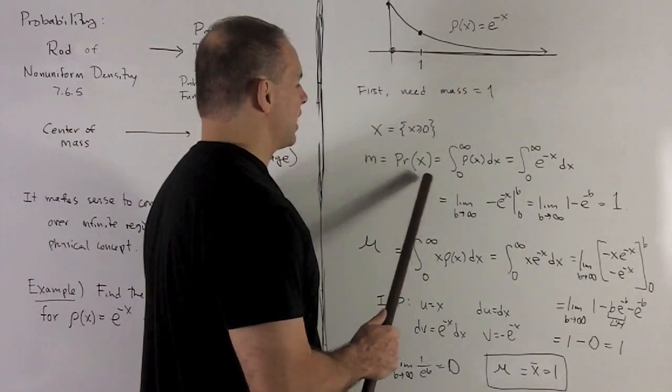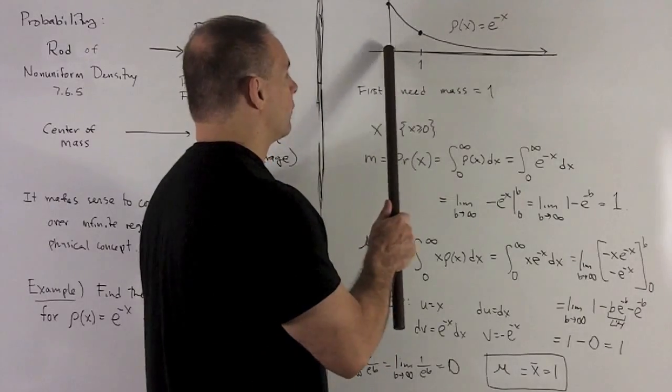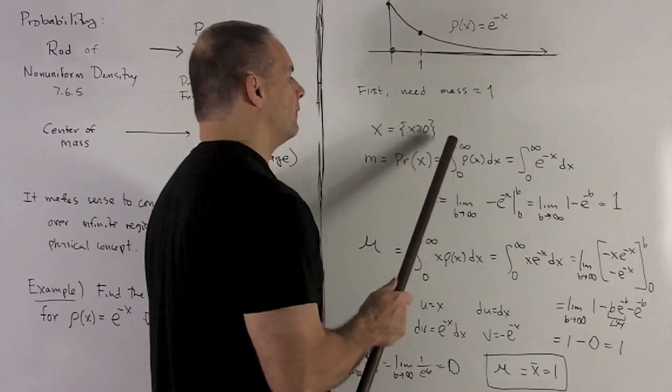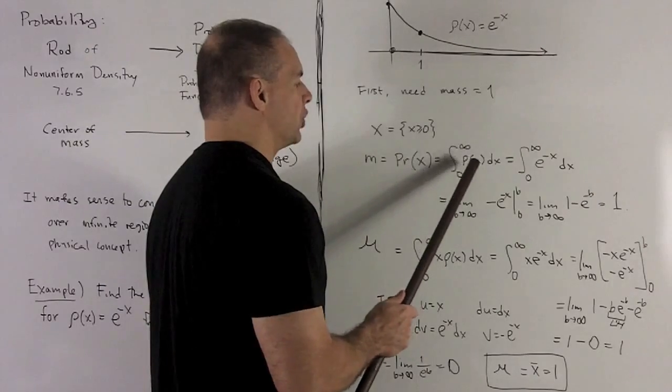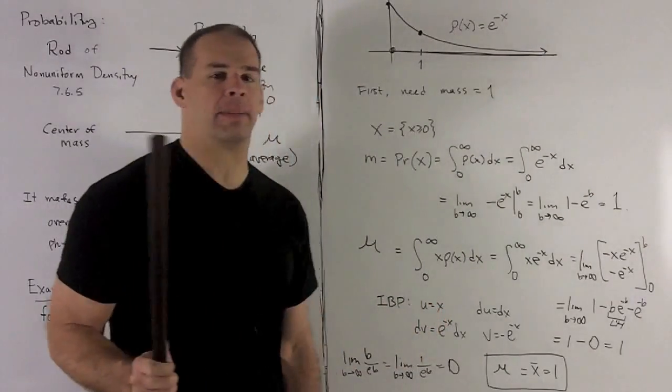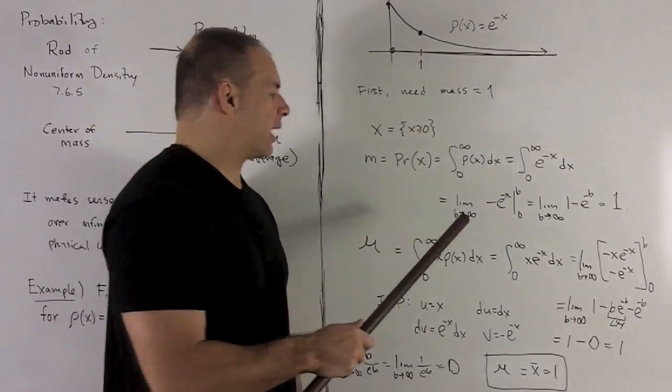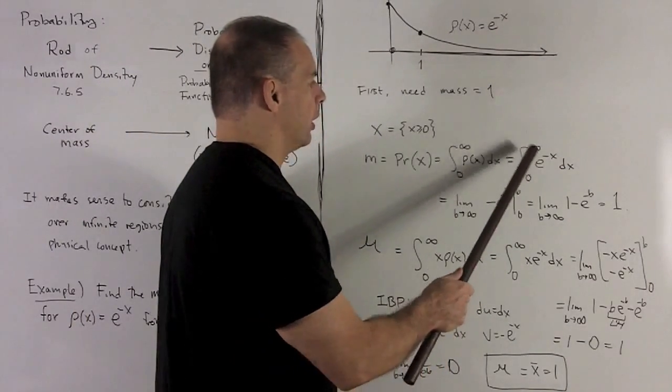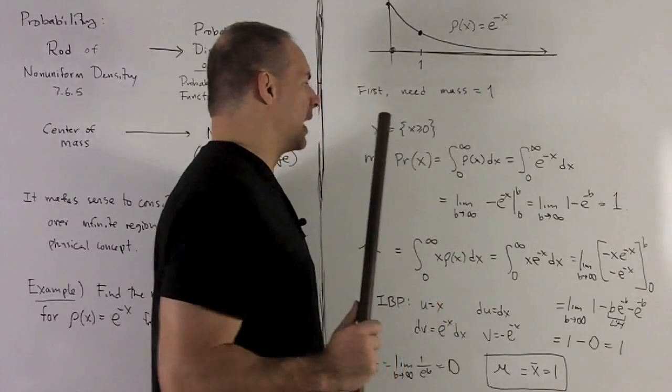The mass could be the same as the probability for the whole entire space. It could be definite integral from zero to infinity of our density function, dx. So we're taking definite integral from zero to infinity of e to the minus x dx. We write out our improper integral. Limit as b goes to infinity. Integral from zero to b of e to the minus x dx.